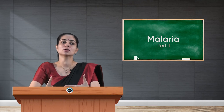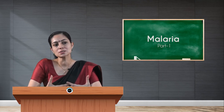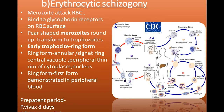The ring form is the first form demonstrable in peripheral blood. The pre-patent period is the time taken for the parasite to appear in the sample after entry into the host. In Plasmodium vivax, this is eight days; in Plasmodium falciparum, it is only five days. This helps in the diagnosis of the infection.